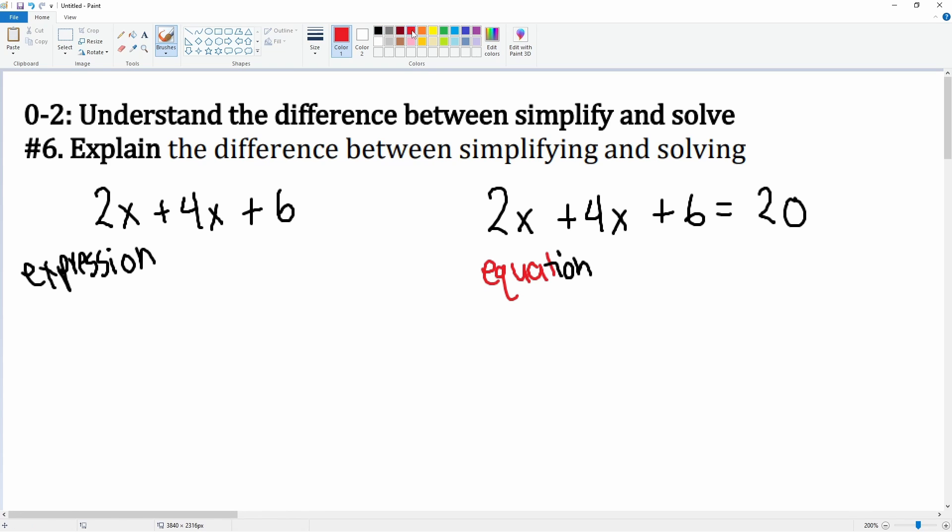An expression you can simplify, so in this way 2x plus 4x becomes 6x plus 6. So we are done here, this is our final answer. Here we're trying to solve, so we're trying to get the letter alone.